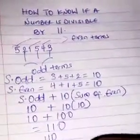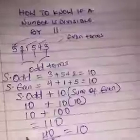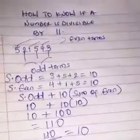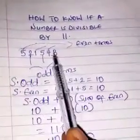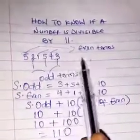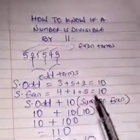It is obvious that 110 is divisible by 11, so 110 is divisible by 11. This means that 521543 is also divisible by 11.